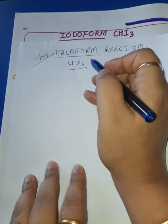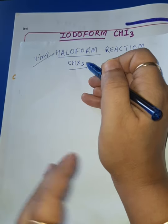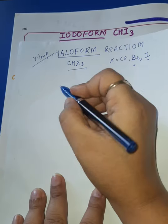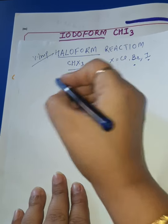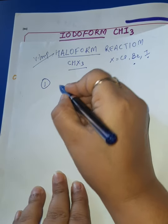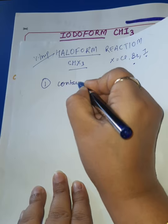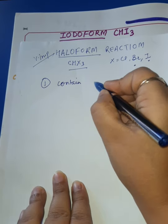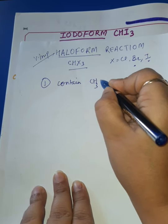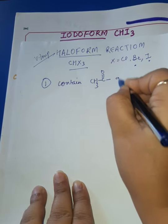This reaction is a very specific reaction — it is given by only certain types of compounds. The first type: compounds which directly contain the methyl keto group, CH3–C=O.